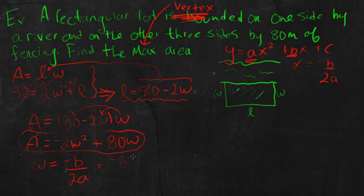So negative 80, all divided by 2 times negative 2. And when you do that, of course, you get negative 80 divided by negative 4. That's going to be a positive 20. And of course, that's meters, because that's what we're dealing with. So there's our meters.